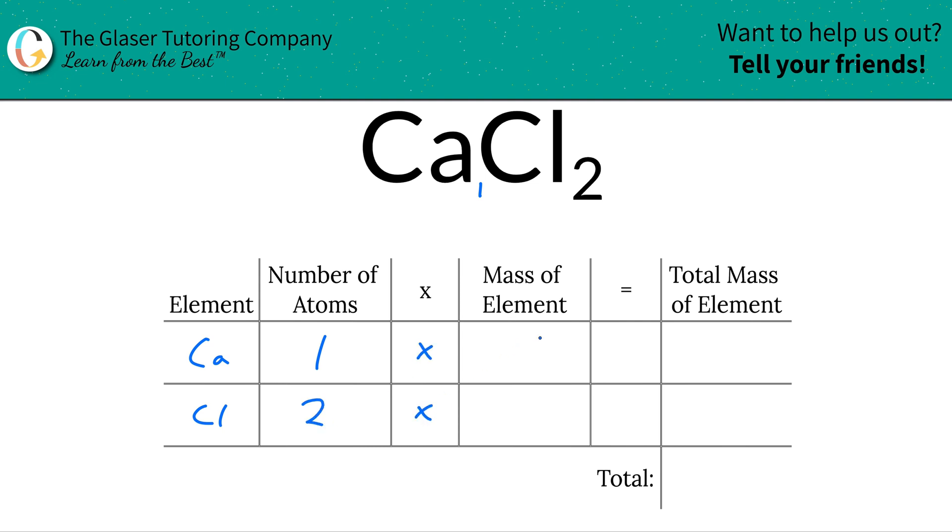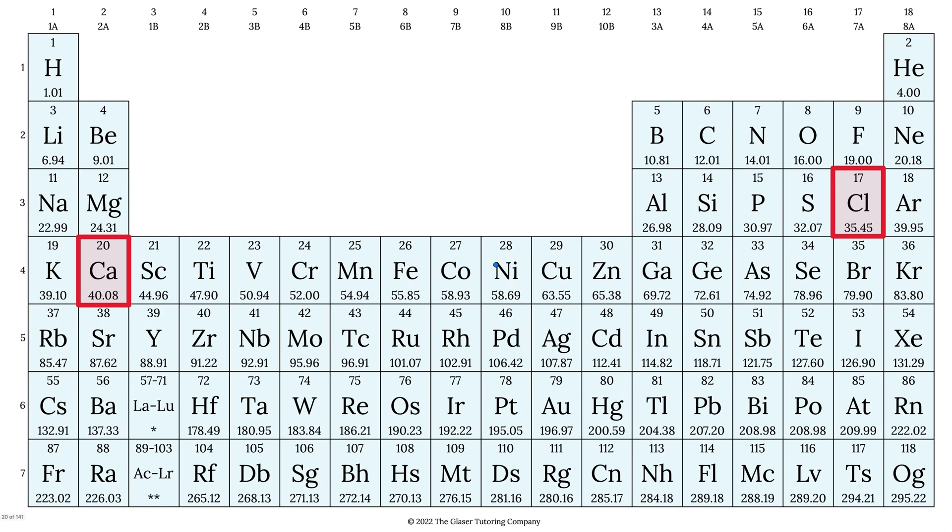Next what we're going to do is take those number of atoms and multiply it by the mass of each particular element. That's where the periodic table comes into play, so let's take a look.